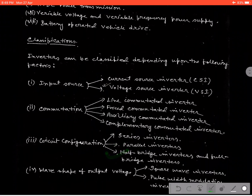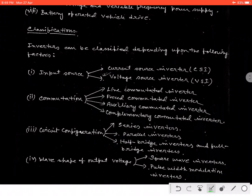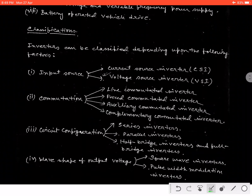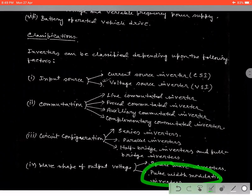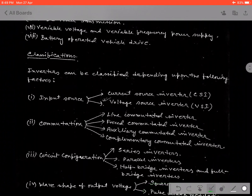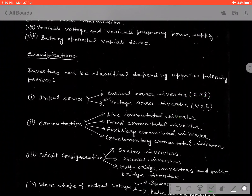And depending on the output waveform — the shape of the output waveform — it can again be classified in two categories: square wave inverter and pulse width modulation inverter. Pulse width modulated inverter is a very important part for industry purpose. Today we are going to discuss about the voltage source inverter for a single phase, and a later discussion will be for the three phase.